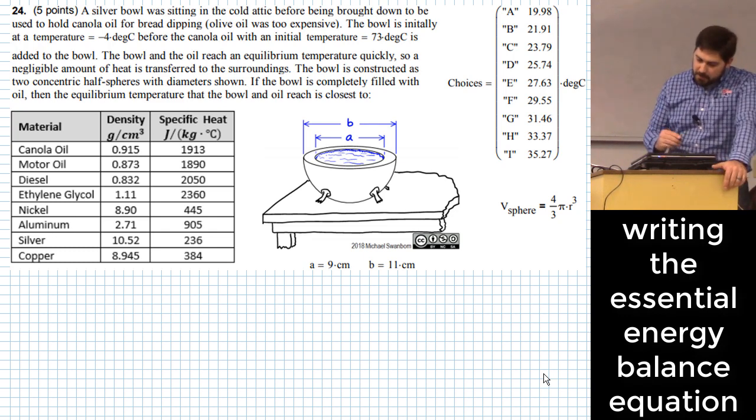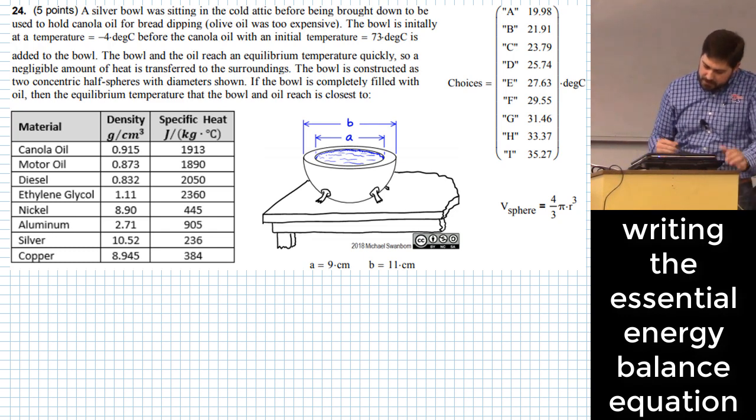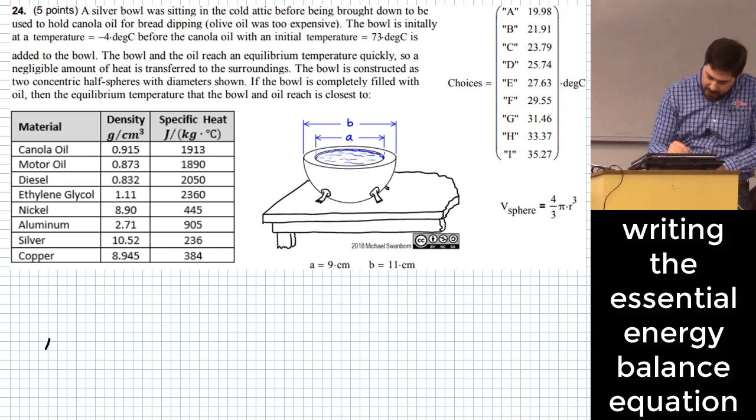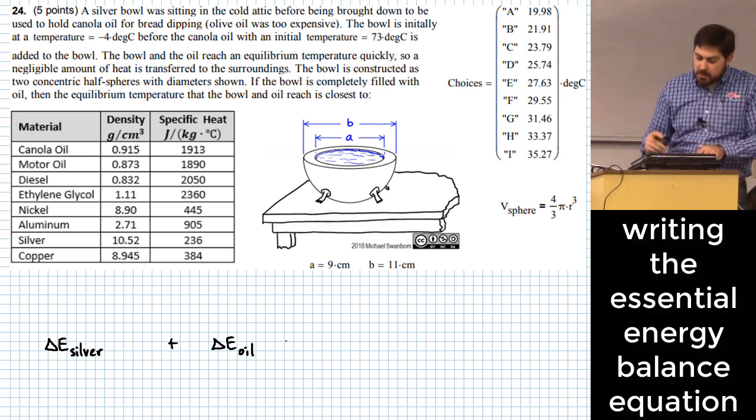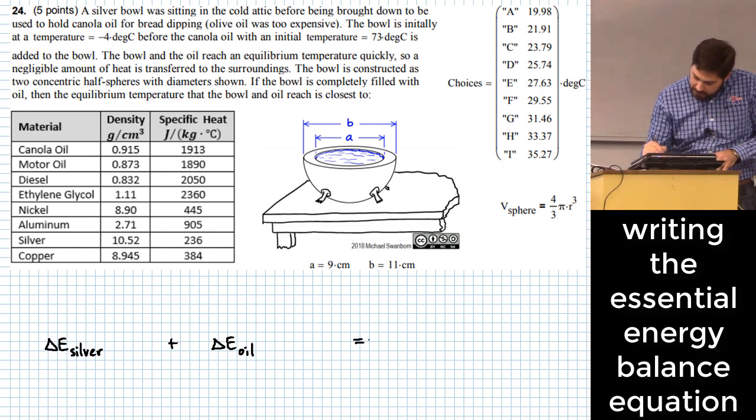So what we're going to do, kind of the big picture of this, is we are going to take the change in internal energy of the silver and add to it the change in internal energy of the oil. And we're going to say that that total change in energy is going to be zero. Why do you think it's going to be zero?